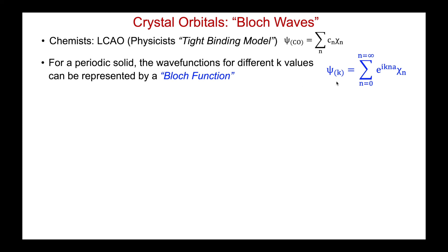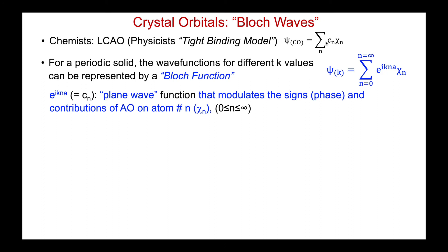The Bloch function gives the wave function of a crystal orbital for a certain k value as the sum over all atoms of e^(ikna), where n is the atom number (zero through infinity), k is our wave vector, i is the complex number, and a is the atom-atom separation. That function is multiplied by the basis function — i.e., the atomic orbitals — to give the product. It's really the sum of all these coefficients — a plane wave function that modulates the signs (i.e., the phase) of the constituent atomic orbitals, and also the magnitude of the contribution on every single atom.